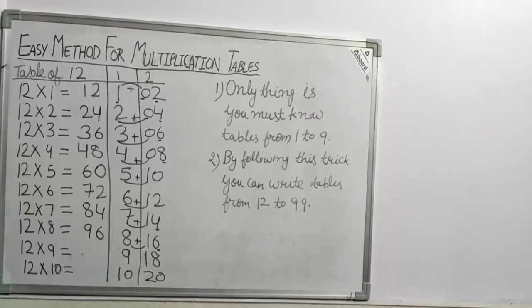Now take 6 as it is. And 8 plus 1 is 9. 12×8 = 96. Now take 8 as it is. 9 plus 1 is 10. 12×9 = 108. Now take 0. 10 plus 2. 10 plus 2 is 12. 12×10 = 120.